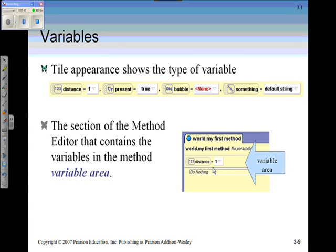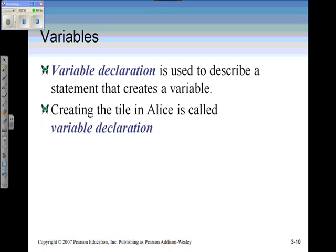Every variable is stored in what's called the variable area which is listed right under the method name. Our variable declaration is used to describe a statement that creates a variable. So for example, whenever you click on the create new variable and it creates that tile inside of Alice, that's our variable declaration.